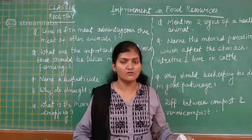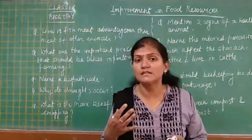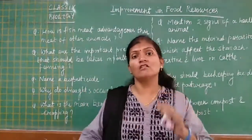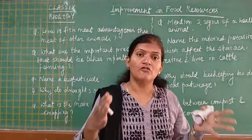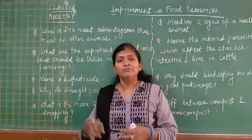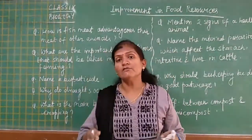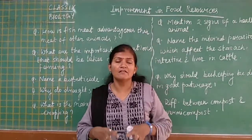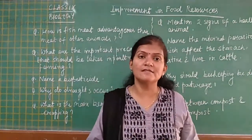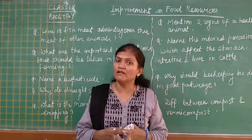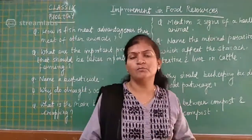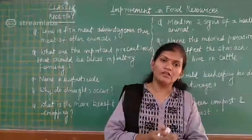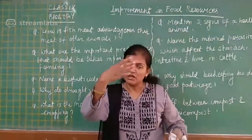We also learned about the various factors for which crop variety improvement is being done, like improving the crop for better disease resistance, so that they are resistant to a variety of diseases and can tolerate the different climates of India.